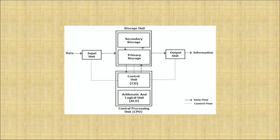What are the components of a computer? Number one is the data. When the data goes into the input, it is being processed through a CPU and we get an output which is called information. Data is raw — what we collect from here and there is the data. What we get as an output is information.